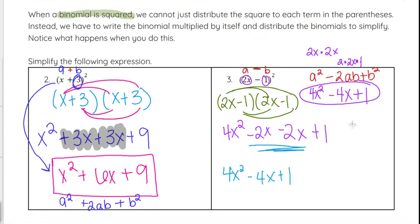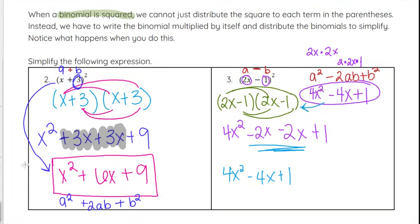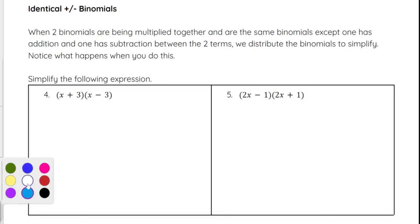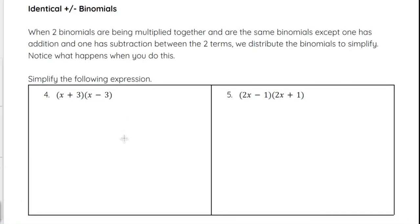Either method works, but if you know the shortcut it can save you time. The same thing applies when we get to factoring, which is where we'll go from something like 4x squared minus 4x plus 1 back to the binomials. Now another special type we're going to see will be especially helpful when you get to factoring what we call a difference of perfect squares.